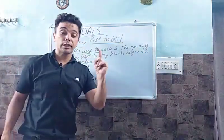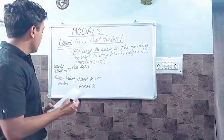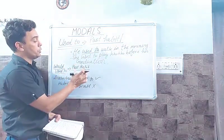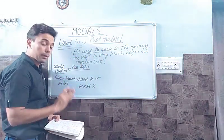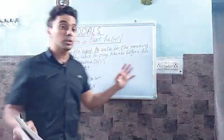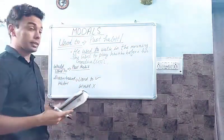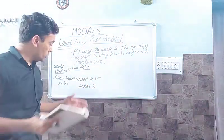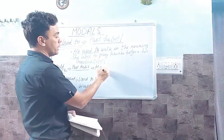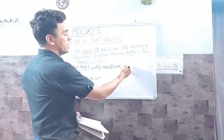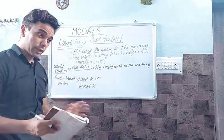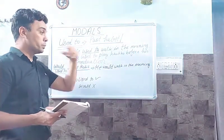To show past habit, we use 'used to.' Now let's understand the difference between 'would' and 'used to.' They both can be used to show past habits — things you no longer do in the present. For example: 'I used to smoke,' 'I used to drink,' 'I used to play football.' Similarly, 'I would play football daily when I was six,' 'I would get up early in the morning when I was twenty.'